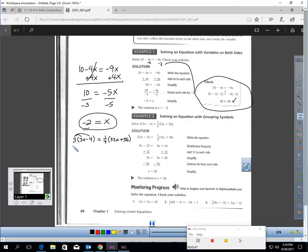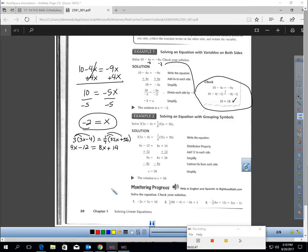On the left, we get 9x minus 12. And on the right when I distribute, a quarter times 32x would be 8x, and one quarter of 56 is 14.